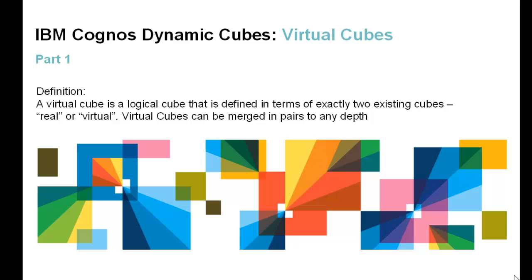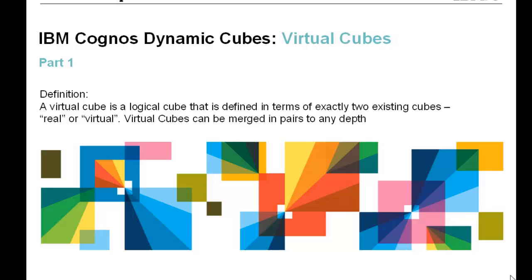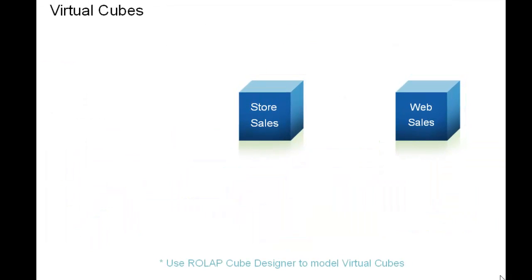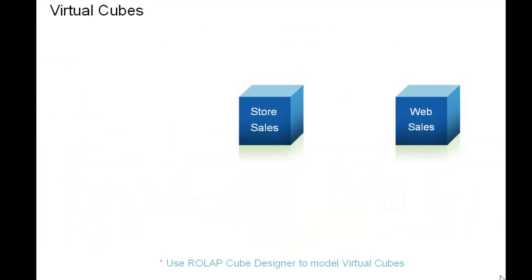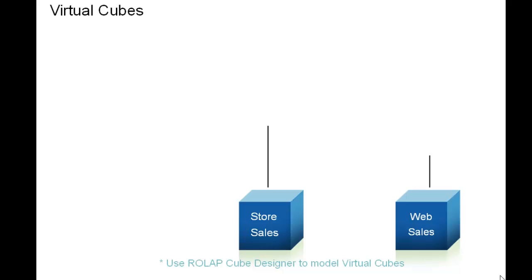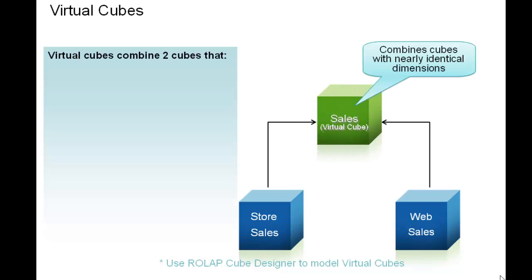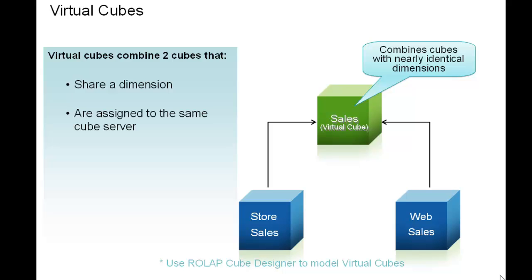A virtual cube is a logical cube that is defined in terms of exactly two existing cubes, real or virtual. A virtual cube combines two cubes that share a dimension, which is the basis for merging them, are assigned to the same cube server, and can belong to different cube models.